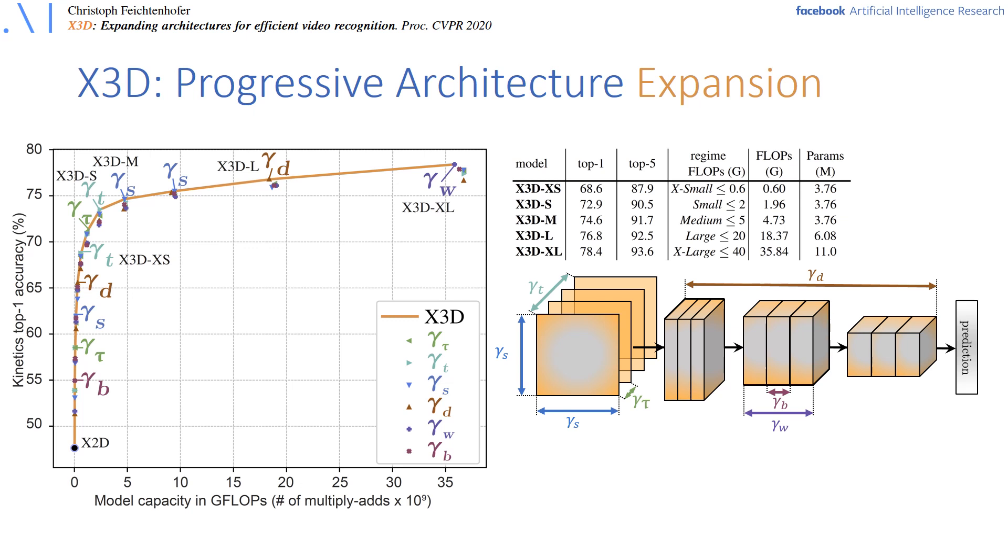The plot shows vertically the classification accuracy and horizontally the model capacity in floating-point operations. Only the last step increases the global width of the model, which shows that the channel dimension can be very small for video recognition, which was also key for the fast pathway in SlowFast networks.